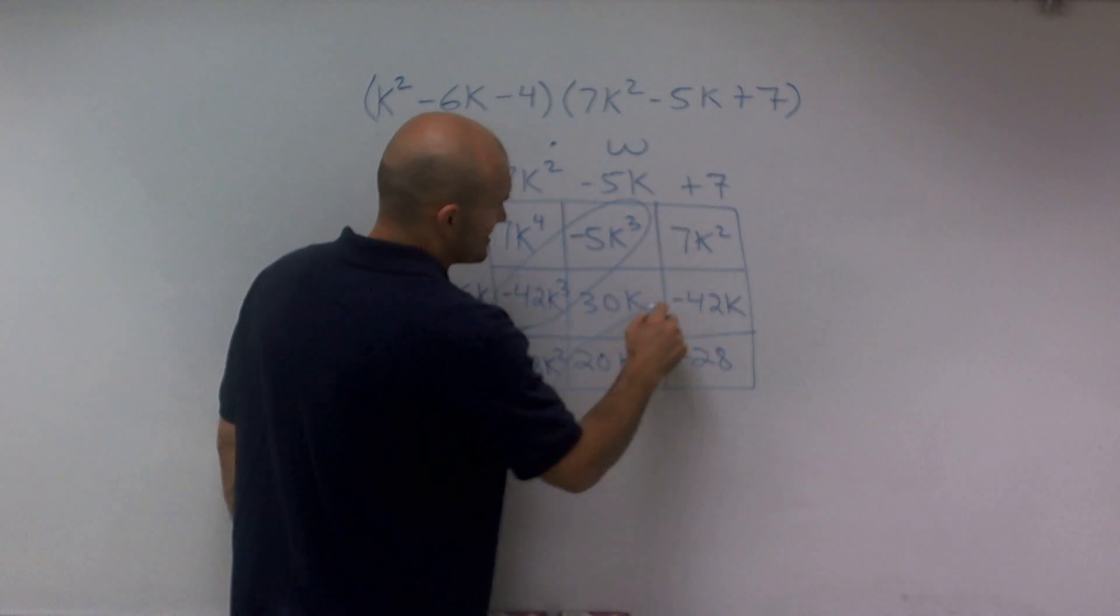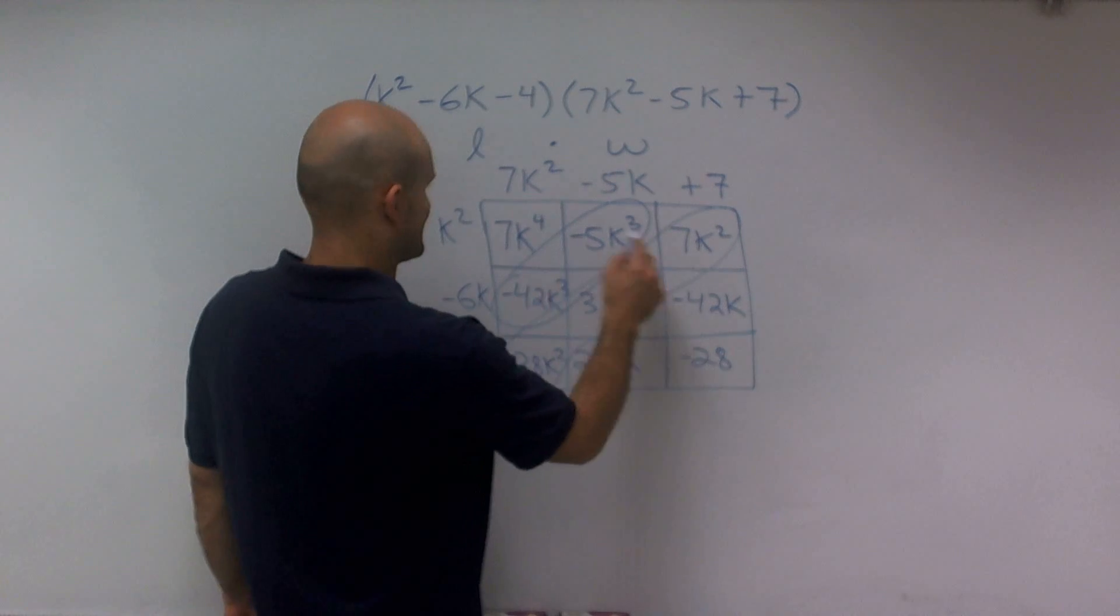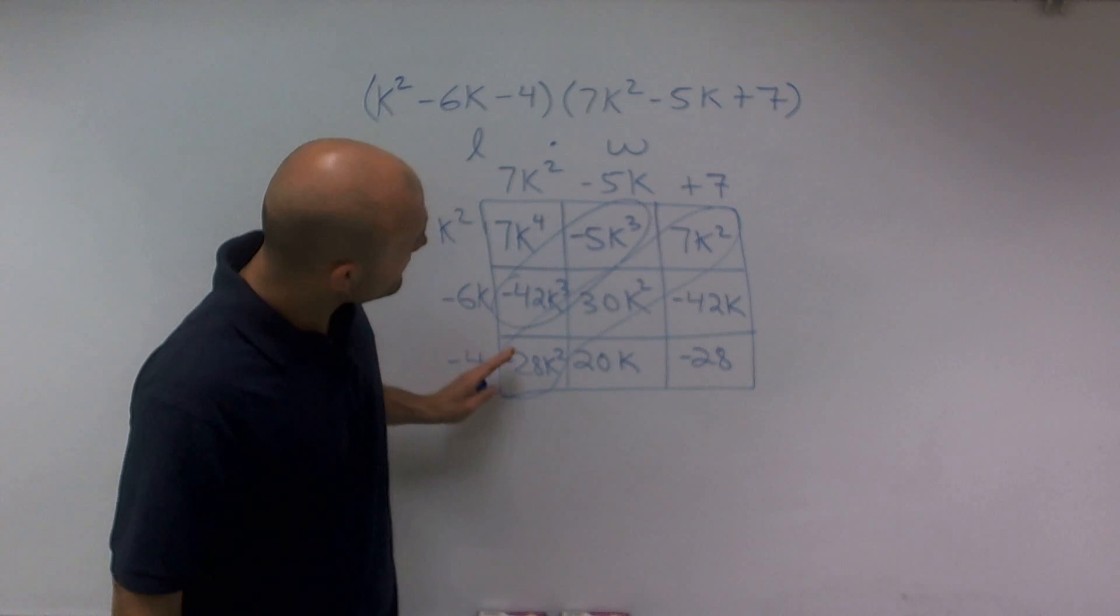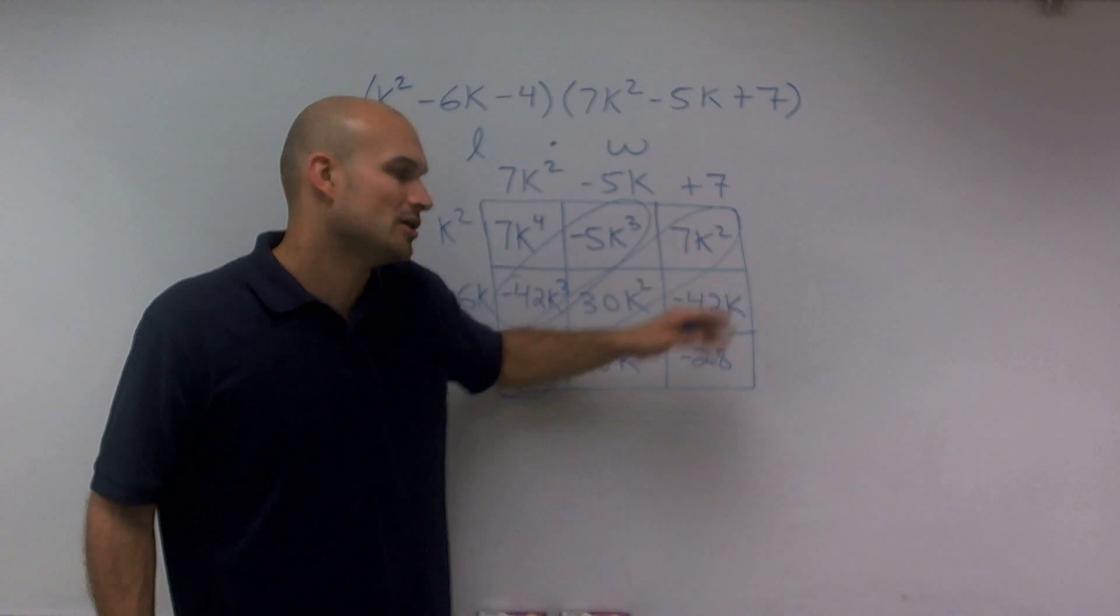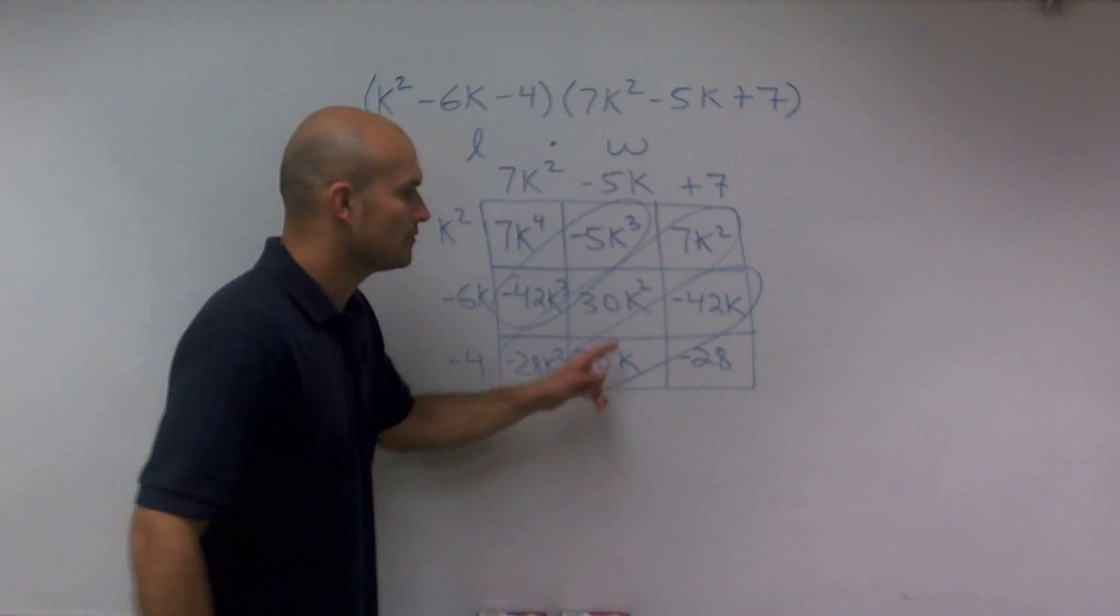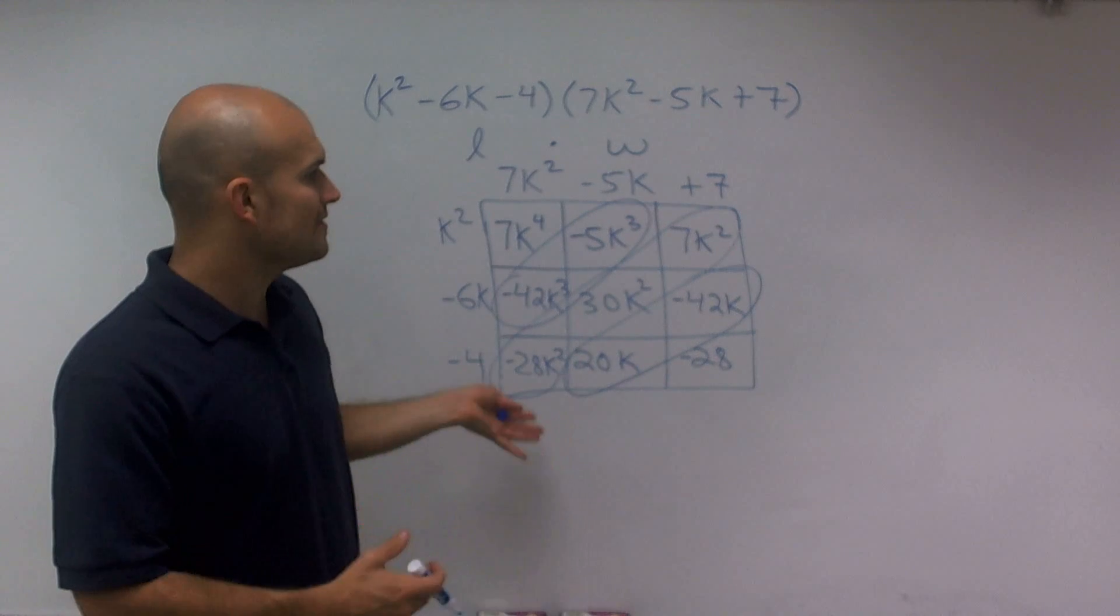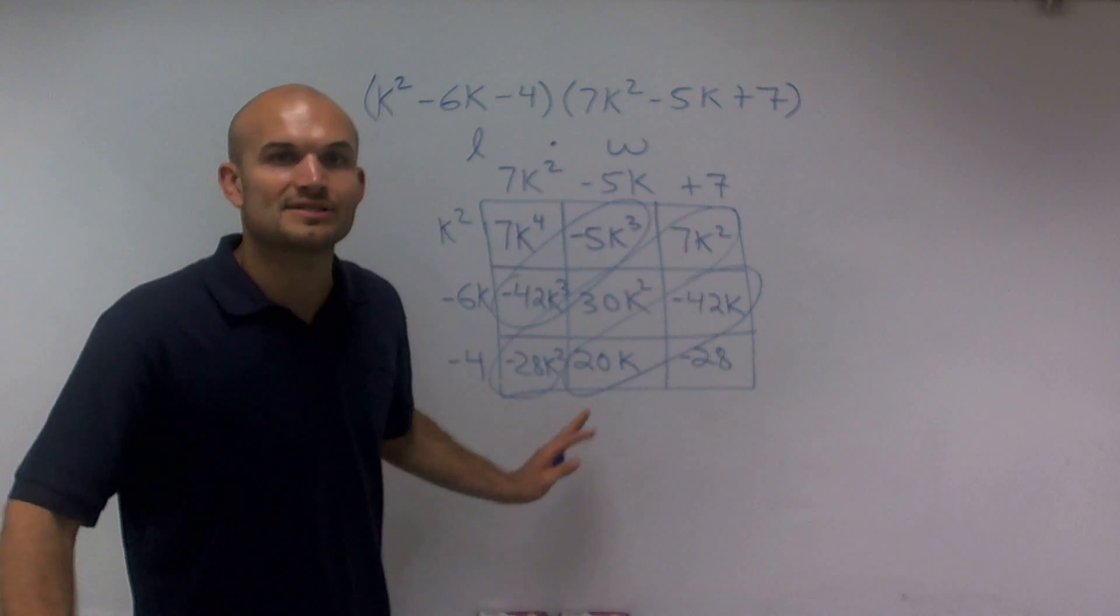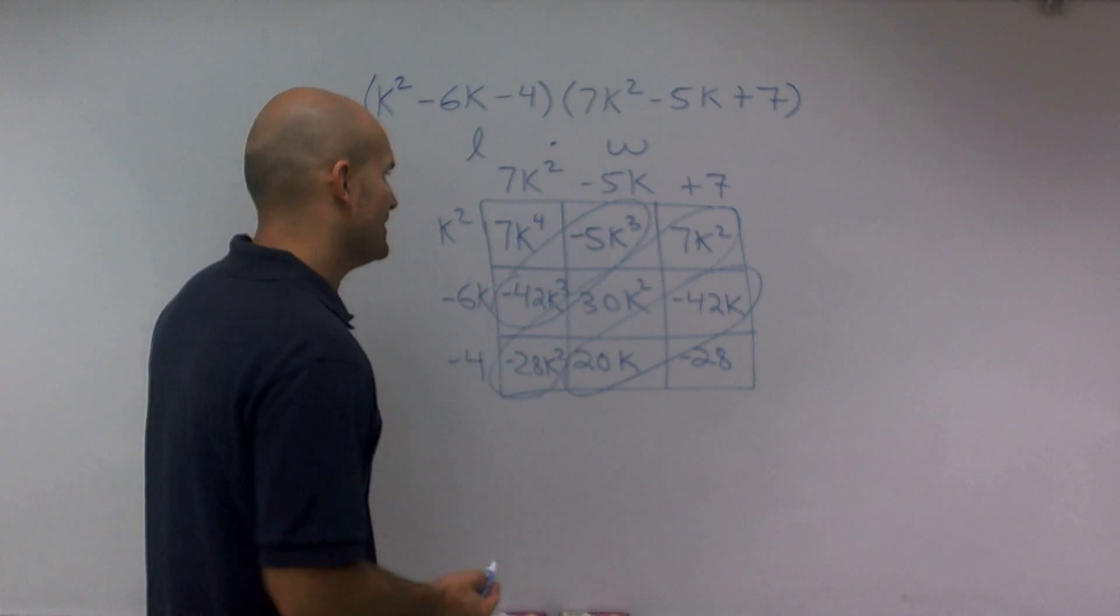These three boxes also have something in common, that's k squared. These all have k squared, meaning I can combine all of these. And then these two boxes also have something in common where they're both k to the first power, meaning I can combine them. So rather than writing out everything and then combining these terms, I notice that I can just combine these diagonals. It's a pretty cool pattern that I see.